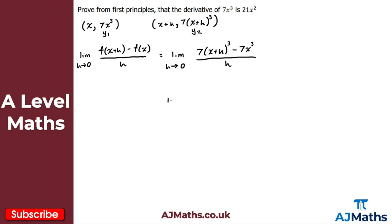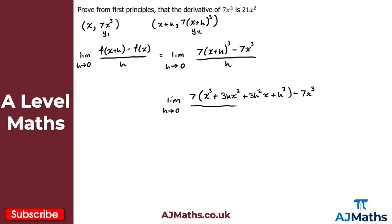After expanding using the binomial expansion, keeping 7 outside: 7 lots of (x³ plus 3hx² plus 3h²x plus h³), minus 7x³, all over h. Multiplying through by 7 gives 7x³ plus 21hx² plus 21h²x plus 7h³, minus 7x³, all over h. The 7x³ and minus 7x³ cancel immediately.